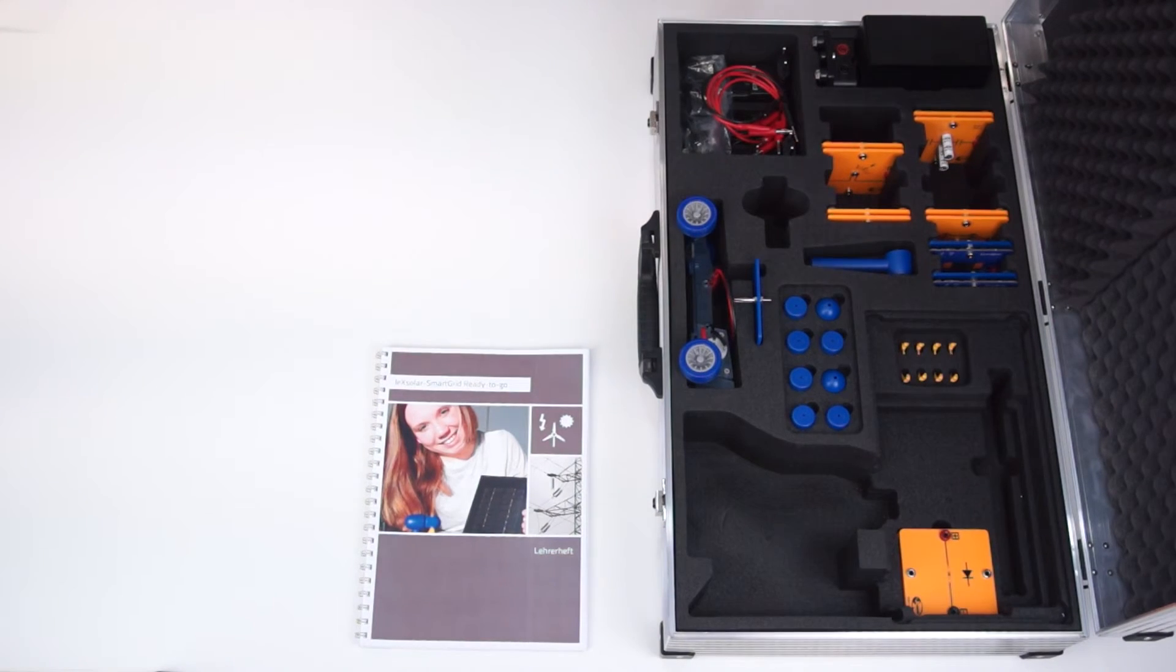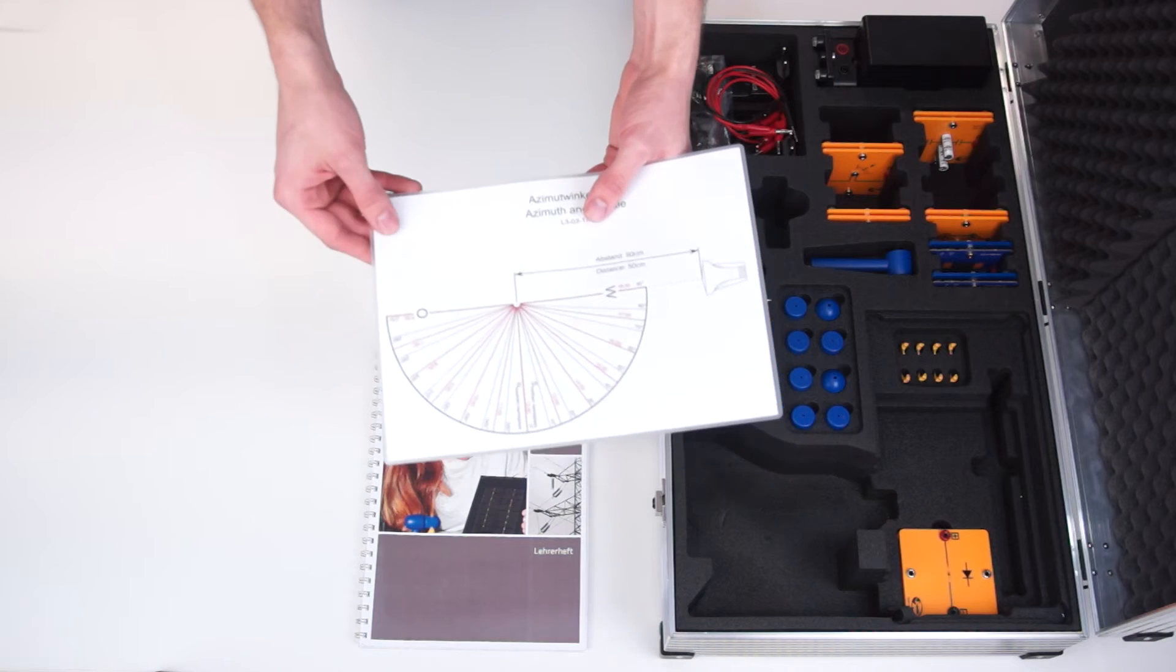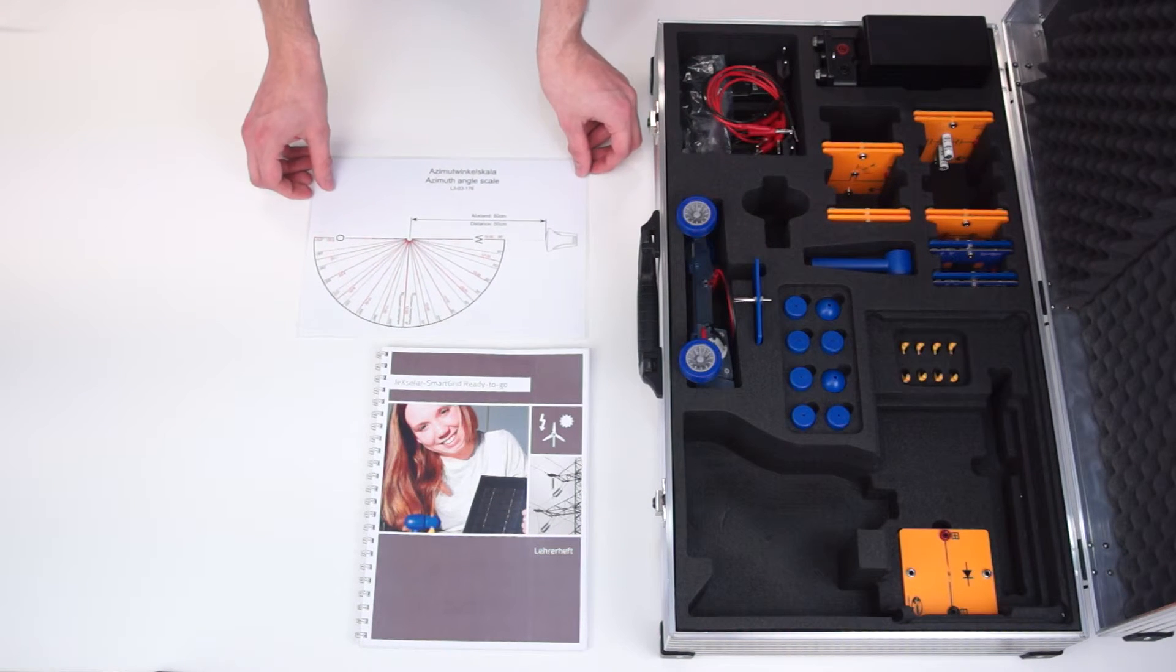For other experiments with the solar module the azimuth angle scale is ready. It enables a simulated course of the day of the sun.